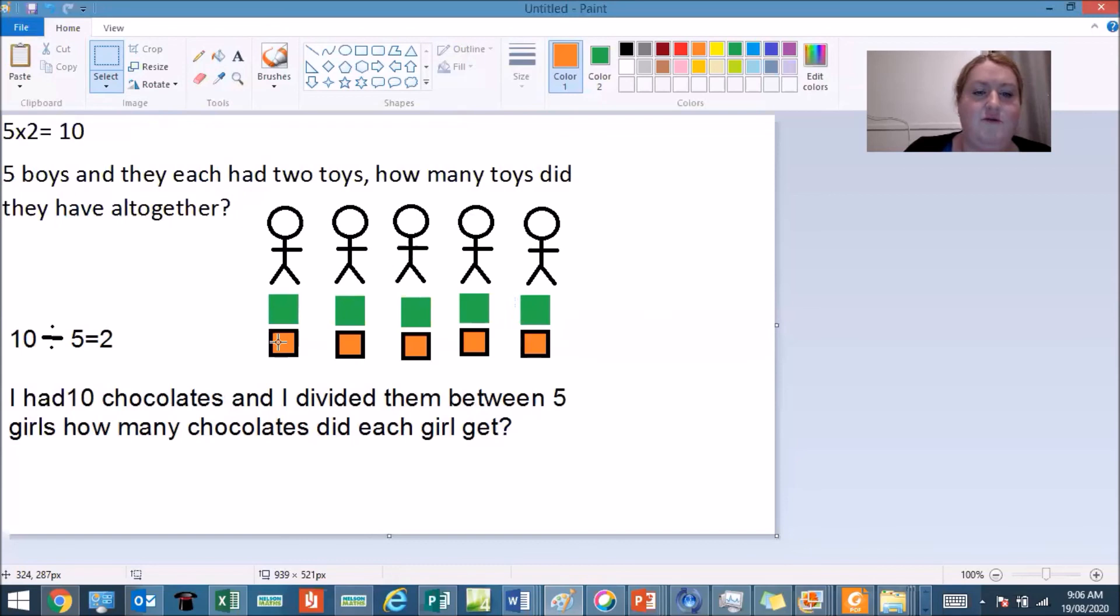Each boy has two toys, so if I count by twos I should get ten. Ready? Two, four, six, eight, ten. There we go, there's my first picture done. And then my next one that I will draw is the following one. I had ten chocolates and I divided them between five girls. How many chocolates did each girl get? So that would be my next one I could work on. So that's a little bit of an extra challenge for you today if you like.